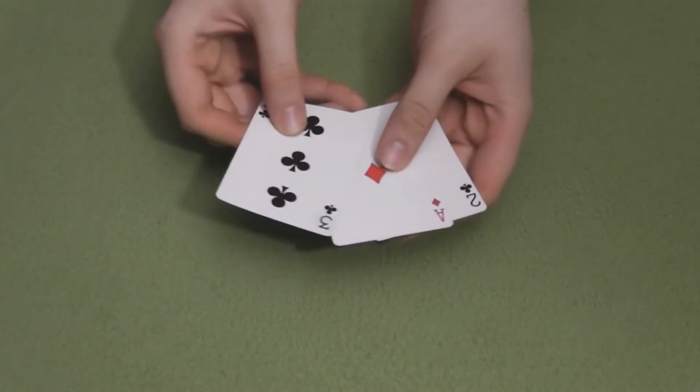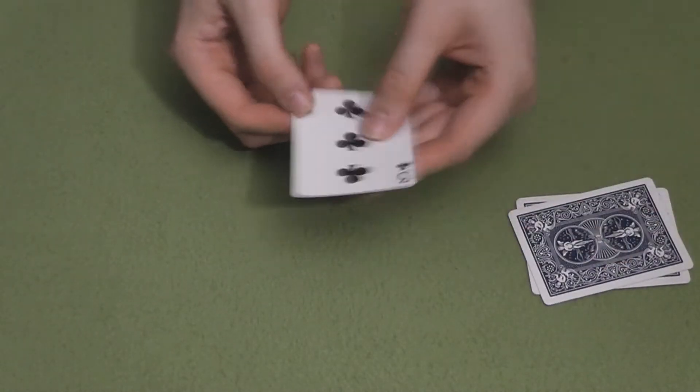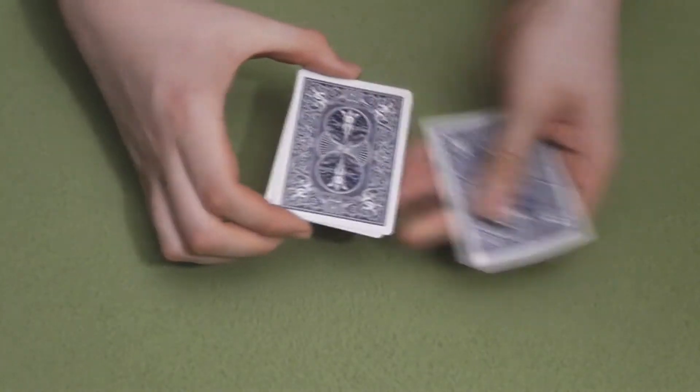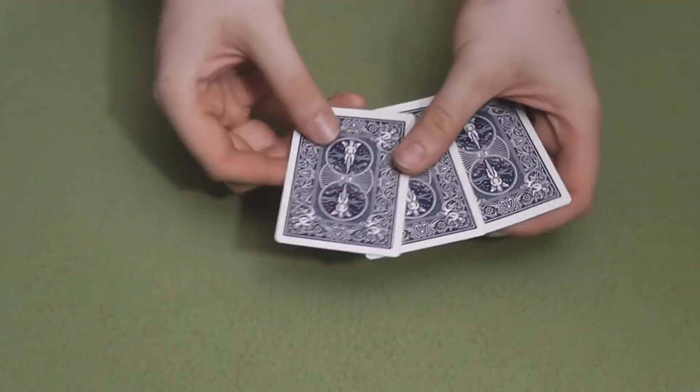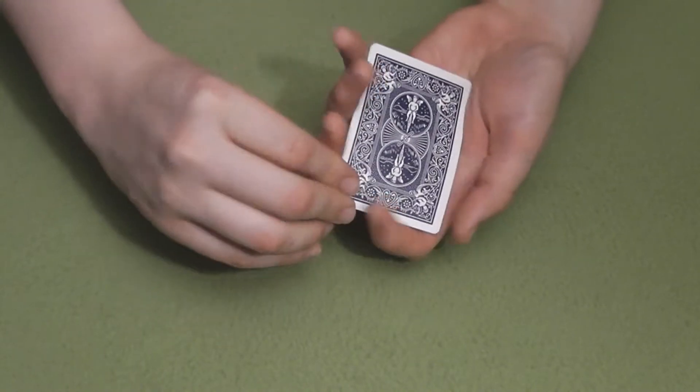These three cards are the three of Clubs, two of Clubs, and Ace of Diamonds. Now, are any of you guys out there the betting type? Well, we're going to play a quick game of three-card monte, but don't worry, I won't be taking any of your money. This is just for fun.